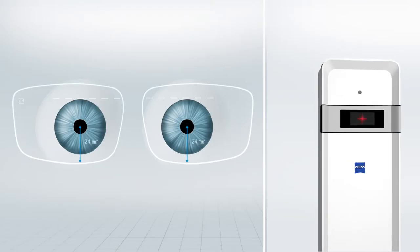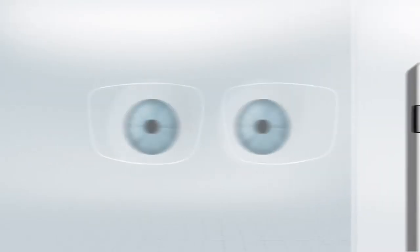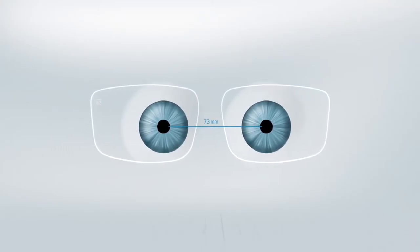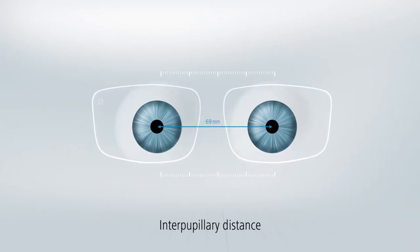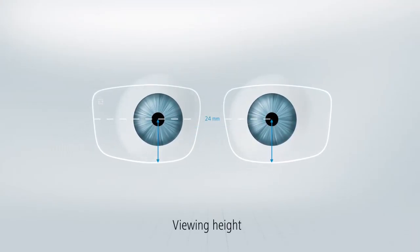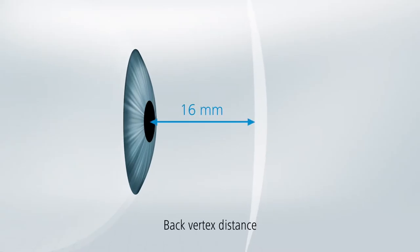During centration, the following parameters are measured: the interpupillary distance, the viewing height, the wrap angle, the back vertex distance, and pantoscopic angle.